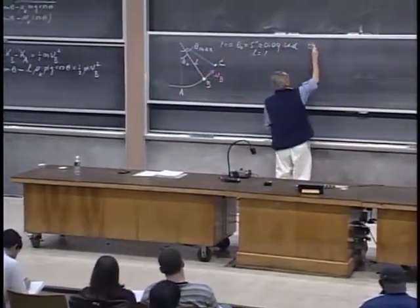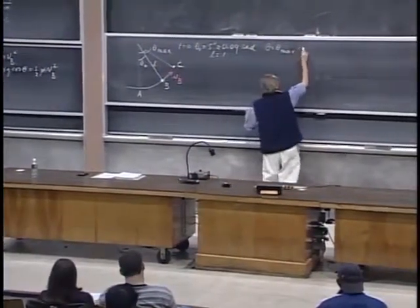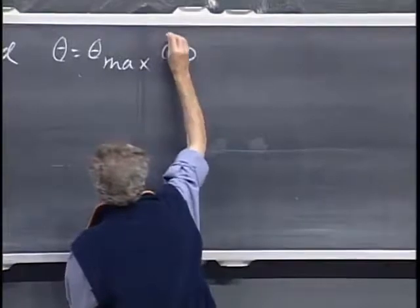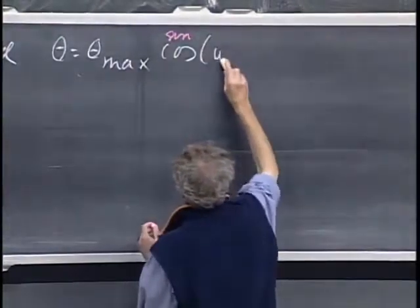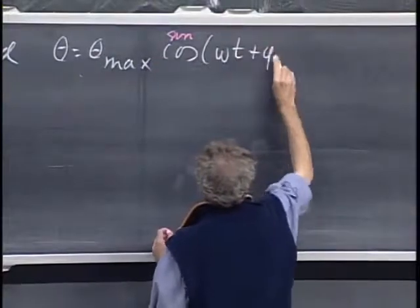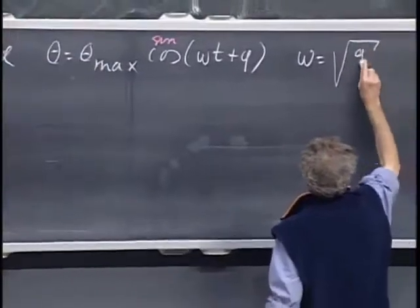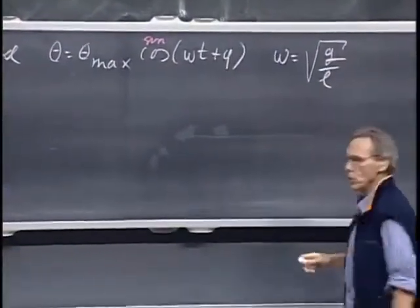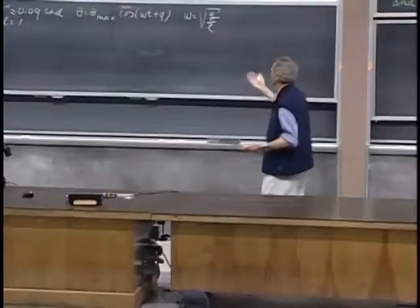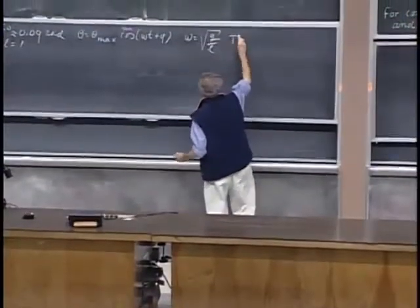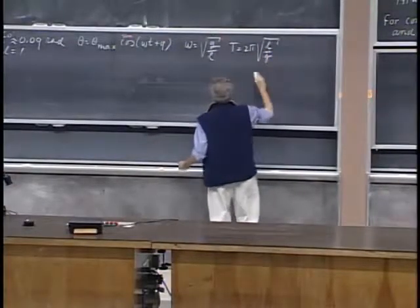This is a small-angle approximation; the angles will never be very large, so we get simple harmonic oscillation to a very good approximation. Thus θ = θ_max · cos(ωt + φ), where ω = √(g/L). I will not give you this equation on the exam — I assume you remember it — and the period equals 2π√(L/g).